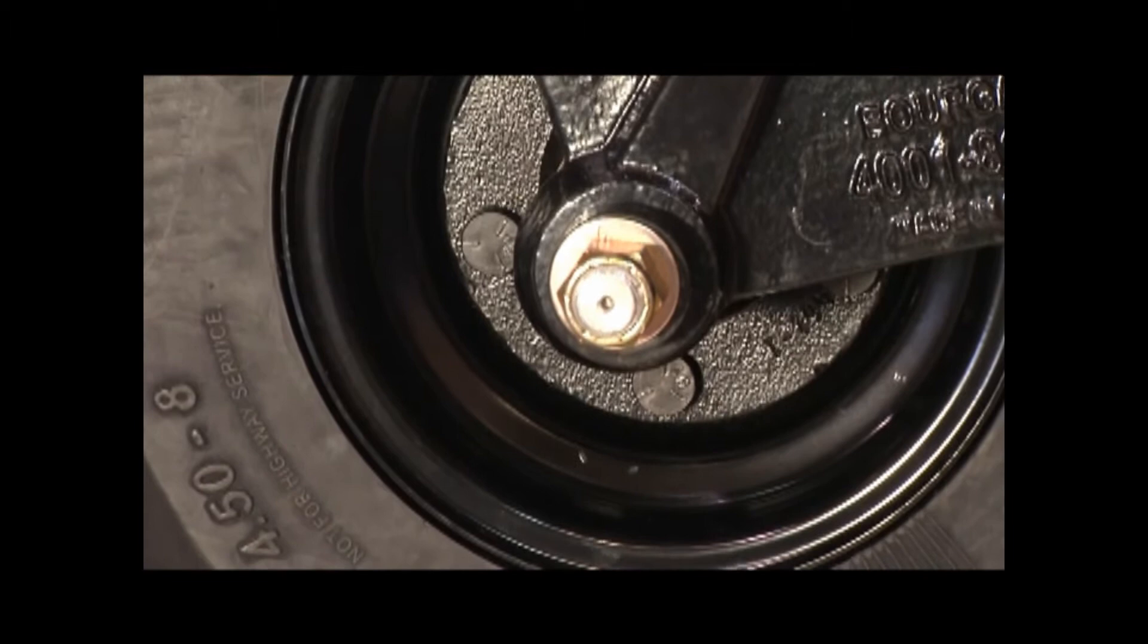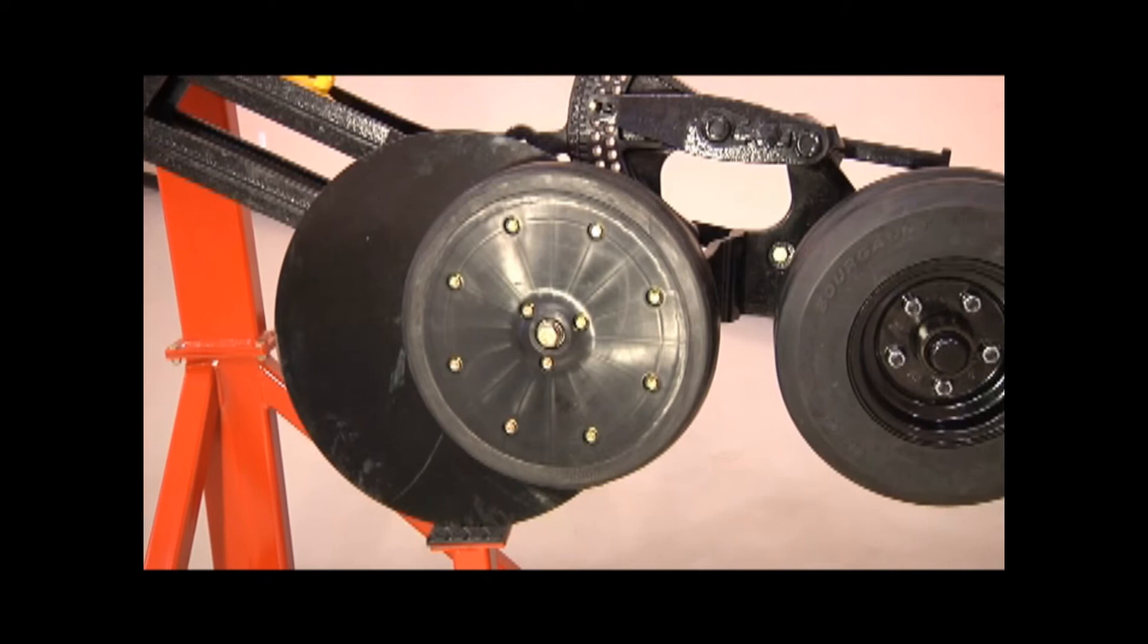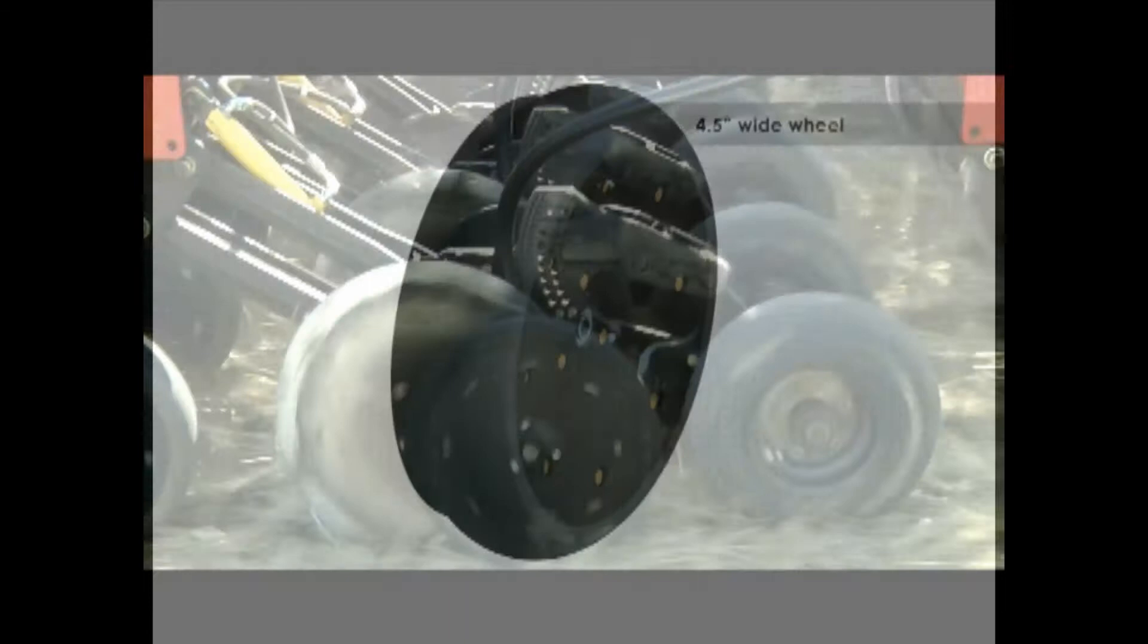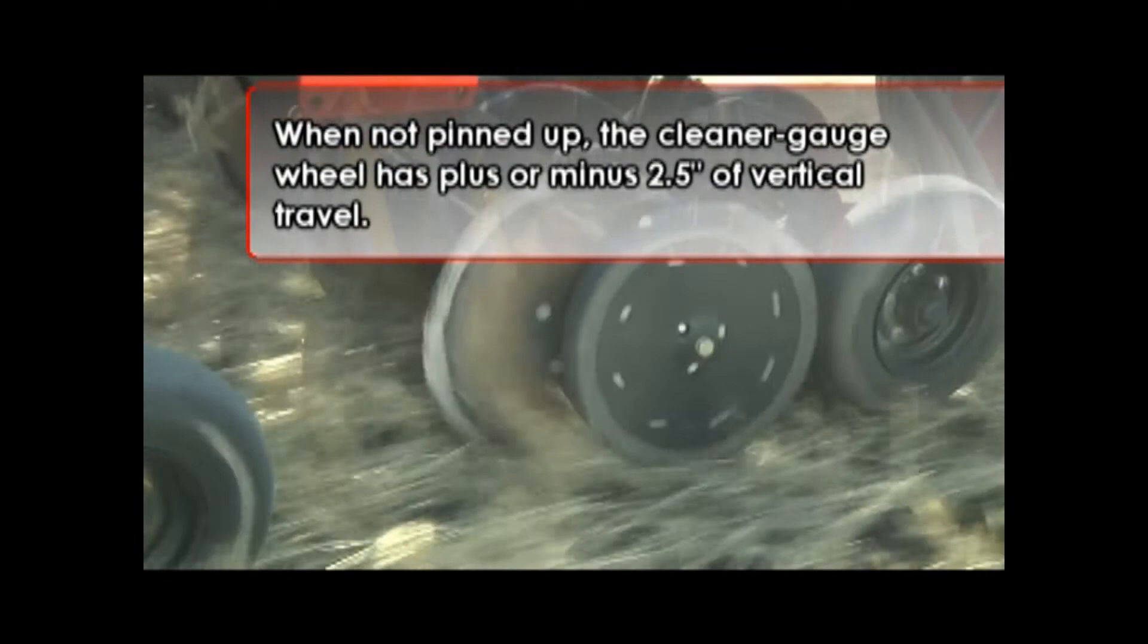If maintenance is required, the packer wheel assembly can be removed easily with one bolt, allowing producers to switch packers quickly. The 16-inch diameter semi-pneumatic cleaner gauge wheel is available in a 3 or 4.5-inch width. When not pinned up, the cleaner gauge wheel has plus or minus 2.5 inches of vertical travel.